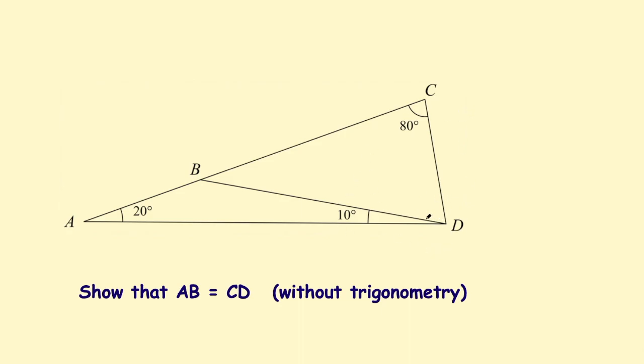And I want this angle in here CDB. If this is 10 degrees, the entire angle is 80. This remaining angle is going to be 70 degrees. Okay 70 plus 10 is 80. And also this angle over here. These three angles need to add up to 180 degrees. 20 plus 10 is 30. So this one's going to be 150 degrees.